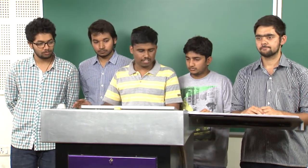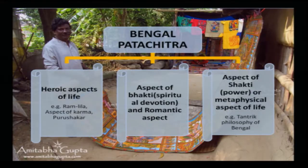Bengal Patichitra deals with three main aspects: the heroic aspects of life like Ramlila and aspects of Karma and Purushkar; the aspect of Bhakti or devotion and romantic aspects; and the third aspect is Shakti or power, which represents the metaphysical aspect of life.